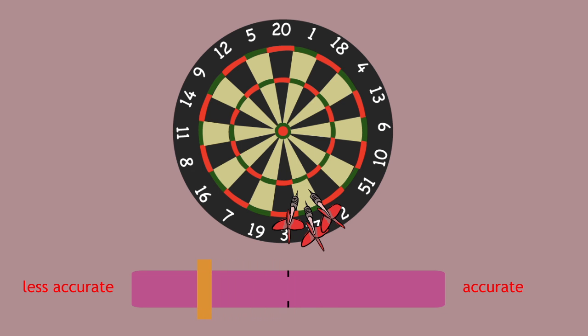The answer is you weren't very accurate because all three darts have landed away from the bullseye. However, the darts are still precise because they have landed in similar places.